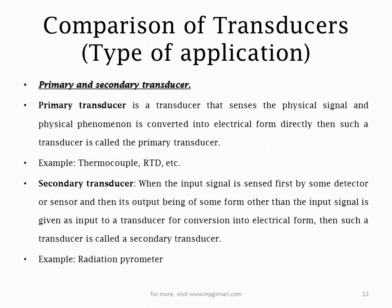Now in detail — type of application, that is primary or secondary. Primary transducer ki formal definition: primary transducer is a transducer that senses the physical signal and the physical phenomenon and converts it into electrical form directly — then such a transducer is called the primary transducer. Koi bhi quantity agar sense karke directly usse electrical quantity ka output deta hai toh it is called primary transducer. For example, thermocouple — woh temperature sense karega, uske do junction honge: hot junction and cold junction. Temperature difference ki wajah se usmein current generate hota hai apne aap. Woh direct touch mein hai aur directly electrical output deta hai — toh woh primary transducer hoga.